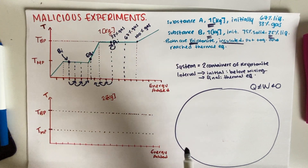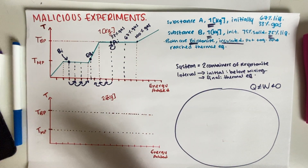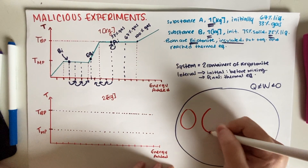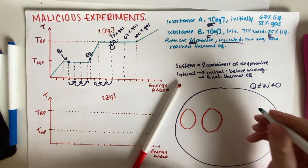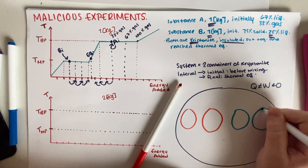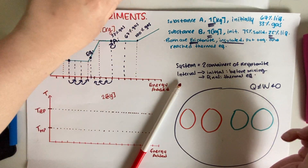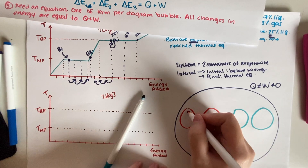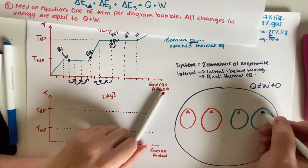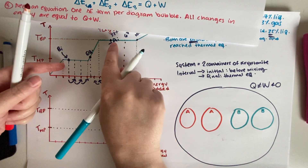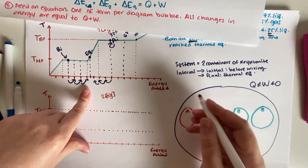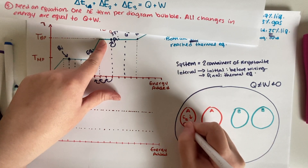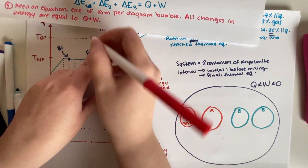Our ending point is in the middle, so we'll have four bubbles total — two for A and two for B. Each bubble should have the object, type of energy changing, and an indicator. For substance A, bond energy E_bond is going down because the gas is converting — going to zero percent gas and becoming liquid. For substance B, bond energy E_bond is going up because the amount of liquid is increasing.